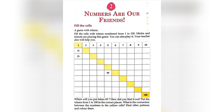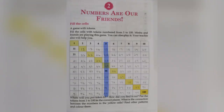Lesson 2: Numbers are our friends. In this page, we have to complete the cells by writing from 1 to 100. Where will you put token 65? We can get 65 by adding 6 tens and 5 ones.